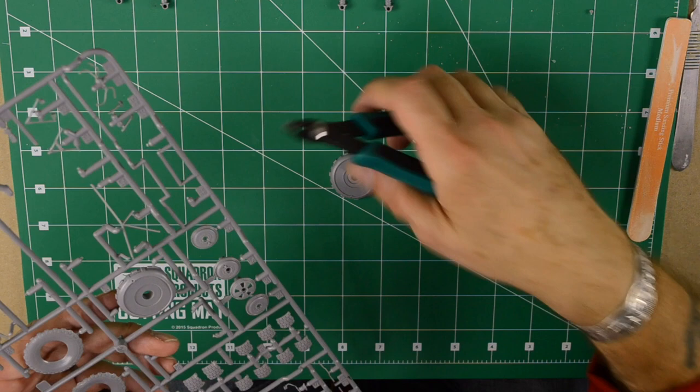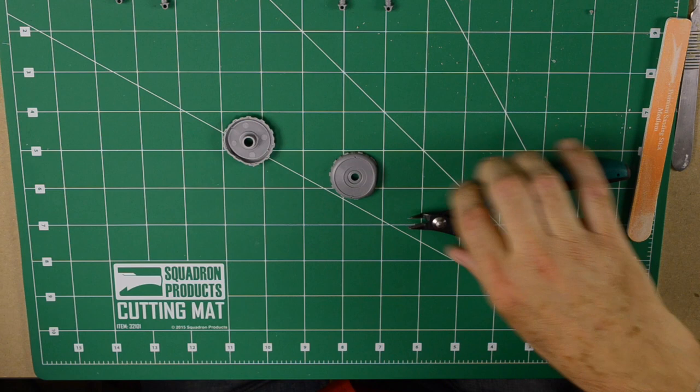We're going to assemble the wheels and the way that Tamiya does it, they have the tread separate. I'm looking forward to putting one of these together and seeing how the end result looks. Let's do this.